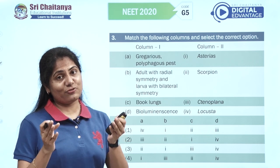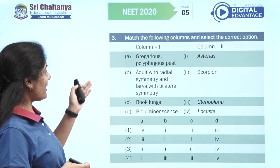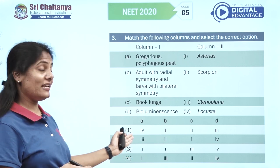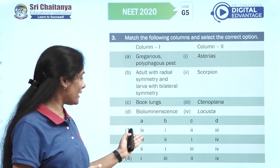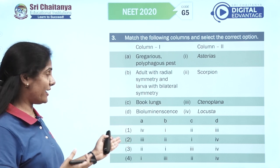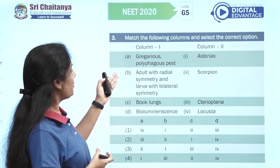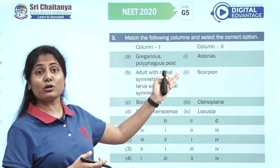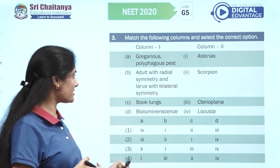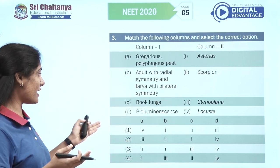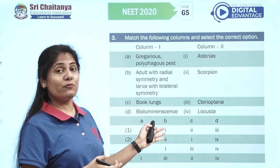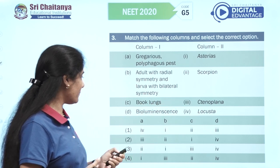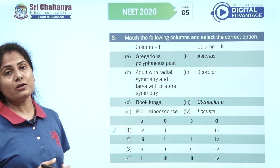A lot of match-the-following today. Gregarious polyphagous pest is Locusta, which is four, and we only have one option. Adult with radial symmetry and larvae with bilateral symmetry belongs to Echinodermata, which is Asterias. Book lungs of course are in Scorpion, an arachnid. Bioluminescence — the ability to emit light — is in Noctiluca, and the answer is option one.